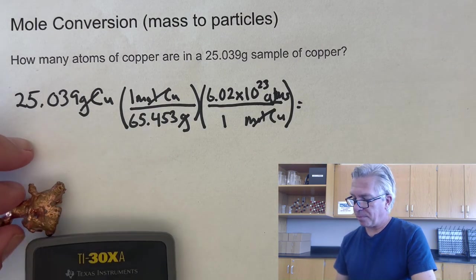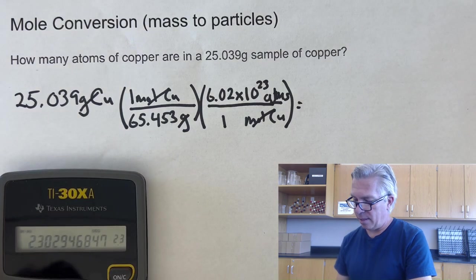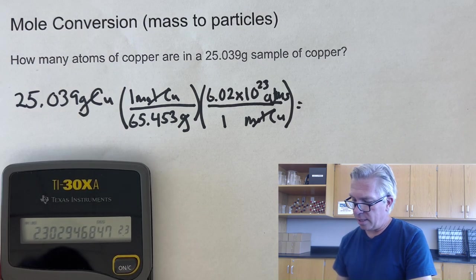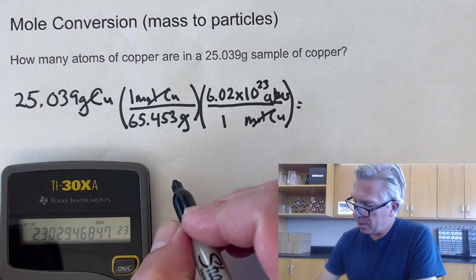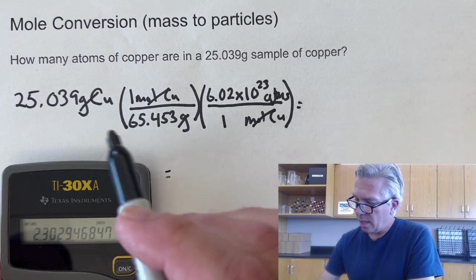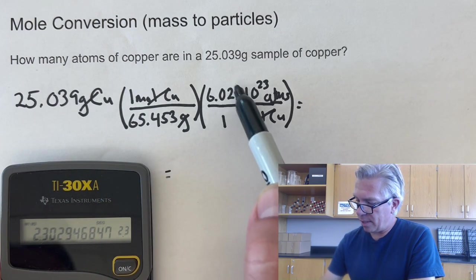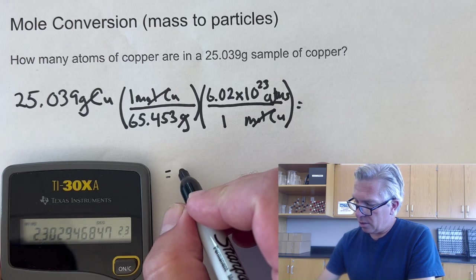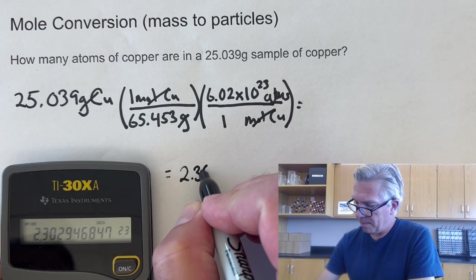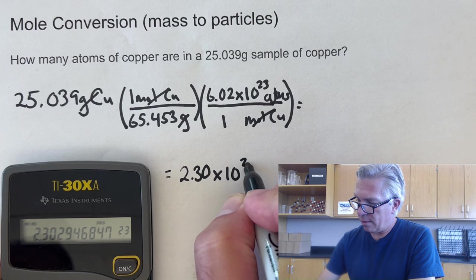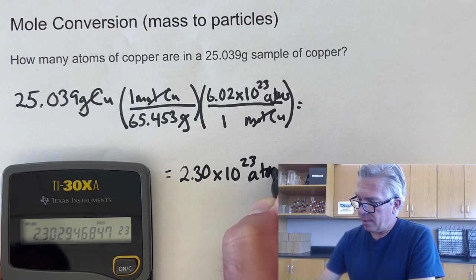Now I punched it in my calculator, and my calculator gave me this number, 2.3, and then the whole bunch of digits. I don't want to put the whole number, a bunch of digits. I started with 5, 5, and I only have 3 here. So I'm just going to keep 3. 2.30 times 10 to the 23rd atoms of copper.